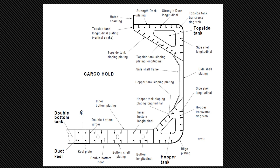What you see on screen now is the nomenclature for a typical transverse section in way of a cargo hold. In general, the plating comprises structural items such as the side shell, the bottom shell, the strength deck, transverse bulkheads, the inner bottom, and top side and hopper tanks. The sloping plating of the hopper tanks provides local boundaries of the structure and carries static and dynamic pressure loads exerted by the cargo, bunkers, ballast, and the sea.